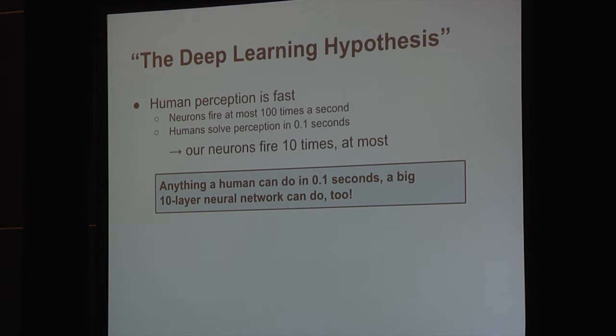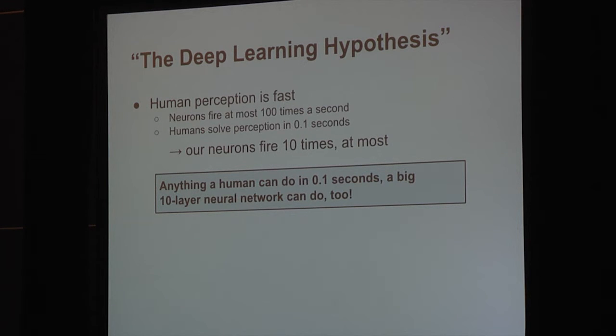Therefore, we can conclude that anything a human can do in a fraction of a second, a big 10-layer neural network can do as well. This gives us confidence that if you have a hard problem, we just need to take a big deep neural network and we'll solve it if you have a lot of data as well. Very conveniently, it is possible to train these models with stochastic gradient descent. Now, despite the great power, deep neural networks cannot learn to map sequences to sequences. They can only map vectors to vectors.